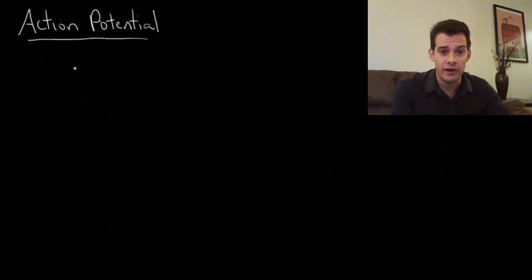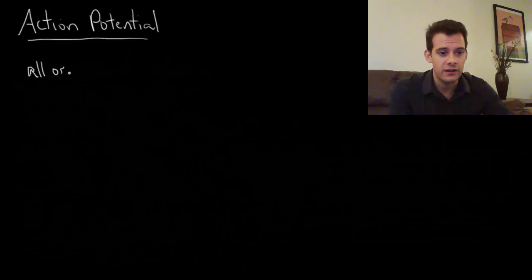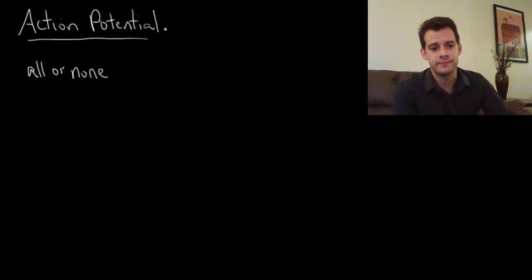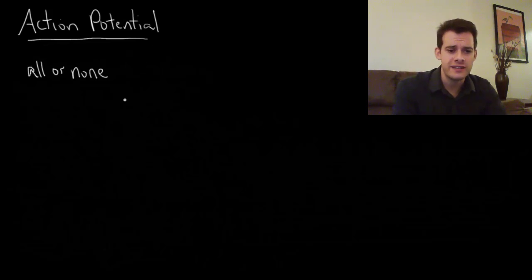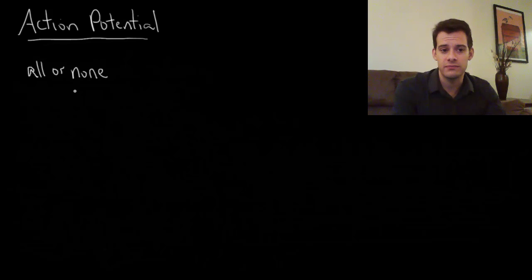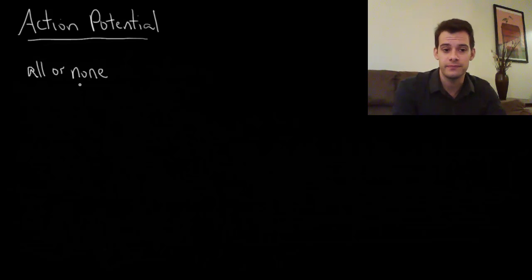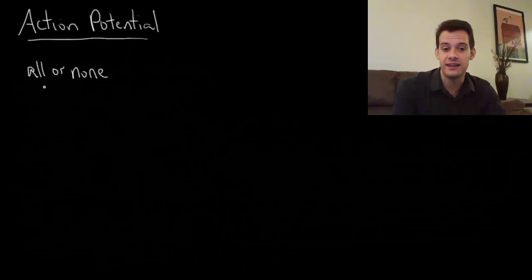The first thing to know about neurons firing is that we say neurons fire in an all-or-none fashion. This means that it either fires or it doesn't. It can't fire a little bit or fire really strongly. It has one message that it can send and it either sends it or it doesn't.